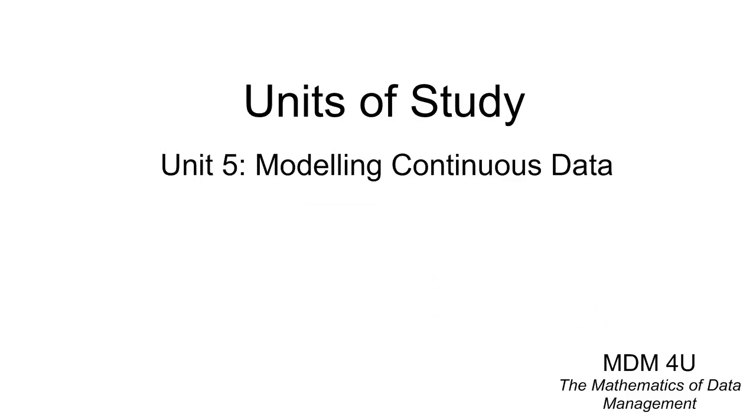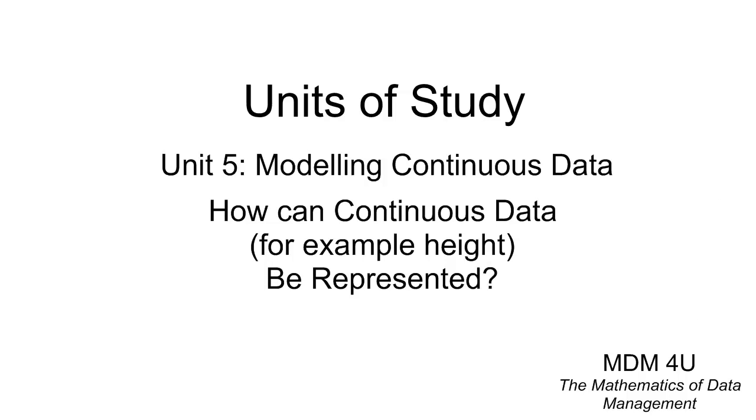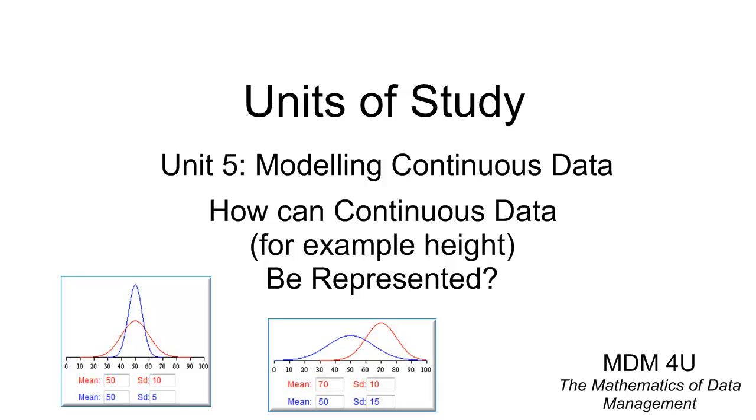For Unit 5, we'll be modeling continuous data, the most common type you'll see modeled with statistics. How can we represent continuous data, for example height? Rather than something discrete like dice outcomes, we'll look at height, which could have an infinite number of possible measurements. The distributions for continuous data need to be modeled differently. This will take us about 11 days.